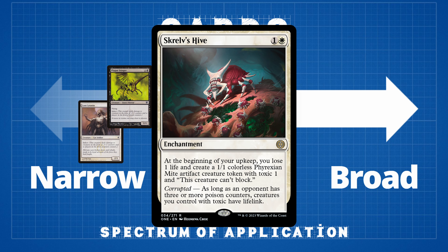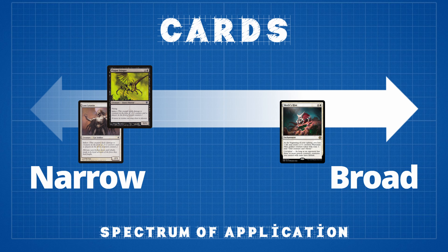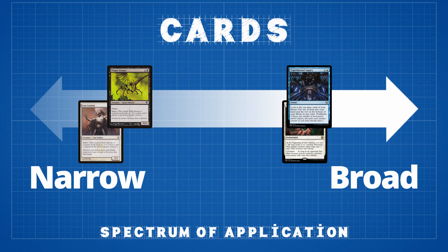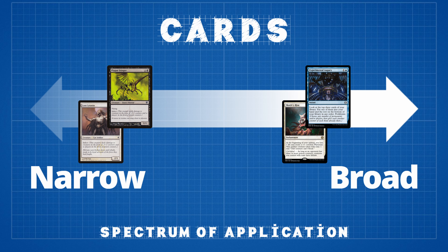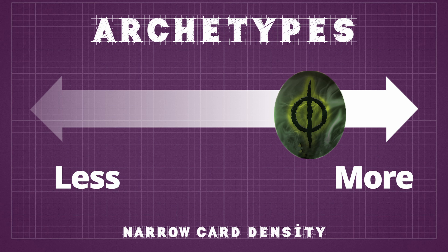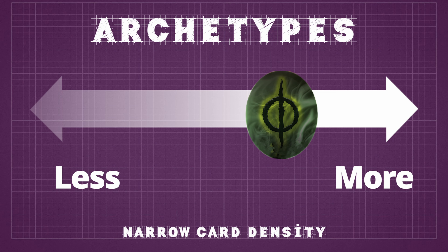Skrelv's Hive, on the other hand, is an enchantment and token generator whose tokens have the keyword toxic. Players interested in a token or go-wide archetype, a sacrifice archetype, or a poison archetype would all be interested in this card. Finally, Experimental Augury is a card selection spell with proliferate, so players interested in +1/+1 counter mechanics, players running a lot of planeswalkers, or players in the poison archetype would likely play it. As you can see, the poison archetype requires a density of cards with the poison mechanic to be viable, though there is some cross-synergy with archetypes that care about counters.